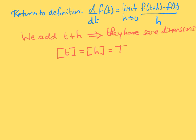Going back to our definition, the derivative is the limit as h goes to zero of the difference of values of our function divided by h. The key thing to notice is that in the argument of the function, we are adding h to t. Because we are adding them, they must be the same type of thing — they must have the same dimensions. So the dimensions of h and the dimensions of time are the same: capital T.